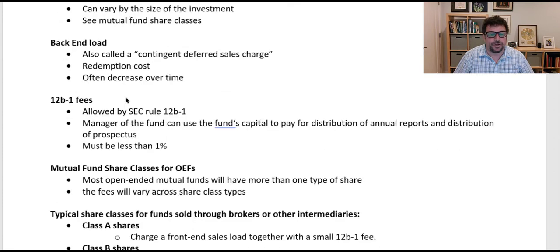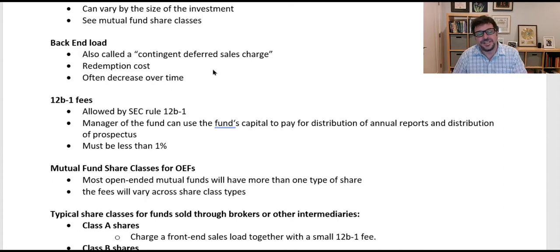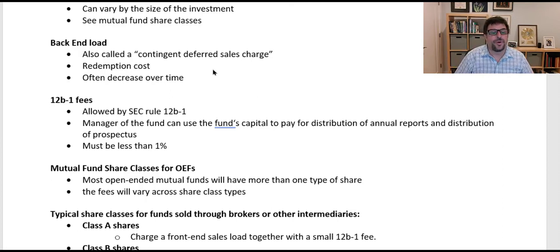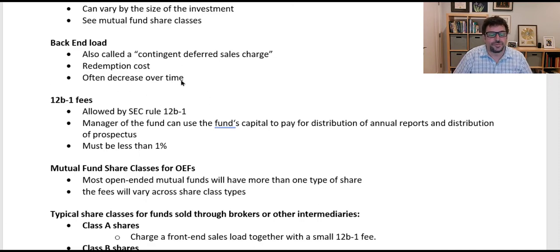A back-end load, also called a contingent deferred sales charge, or CDSC, is a redemption cost. If I buy the fund and immediately sell it, I only get 95% of my money back. But if I wait a year, the deferred sales charge decreases — it goes from 5% to 4%, 3%, 2%, and decreases over time. The idea is to encourage people to leave their money in the fund. If I'm going to leave my money in the fund for a very long time, I don't pay a back-end load.